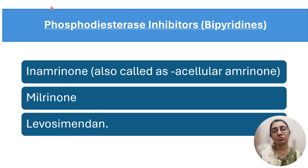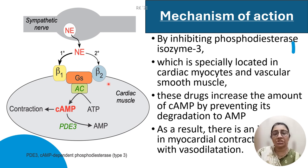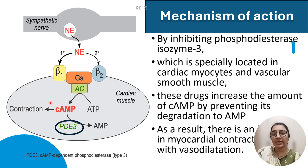Positive inotropic drugs include phosphodiesterase inhibitors and beta agonists. In the phosphodiesterase inhibitor group, the drugs are inamrinone, milrinone, and levosimendan. The mechanism of action of phosphodiesterase 3 enzyme inhibitors is that they inhibit phosphodiesterase 3, which is located at cardiac myocytes and vascular smooth muscle, thereby inhibiting the degradation of cyclic AMP to AMP, increasing the concentration of cyclic AMP.